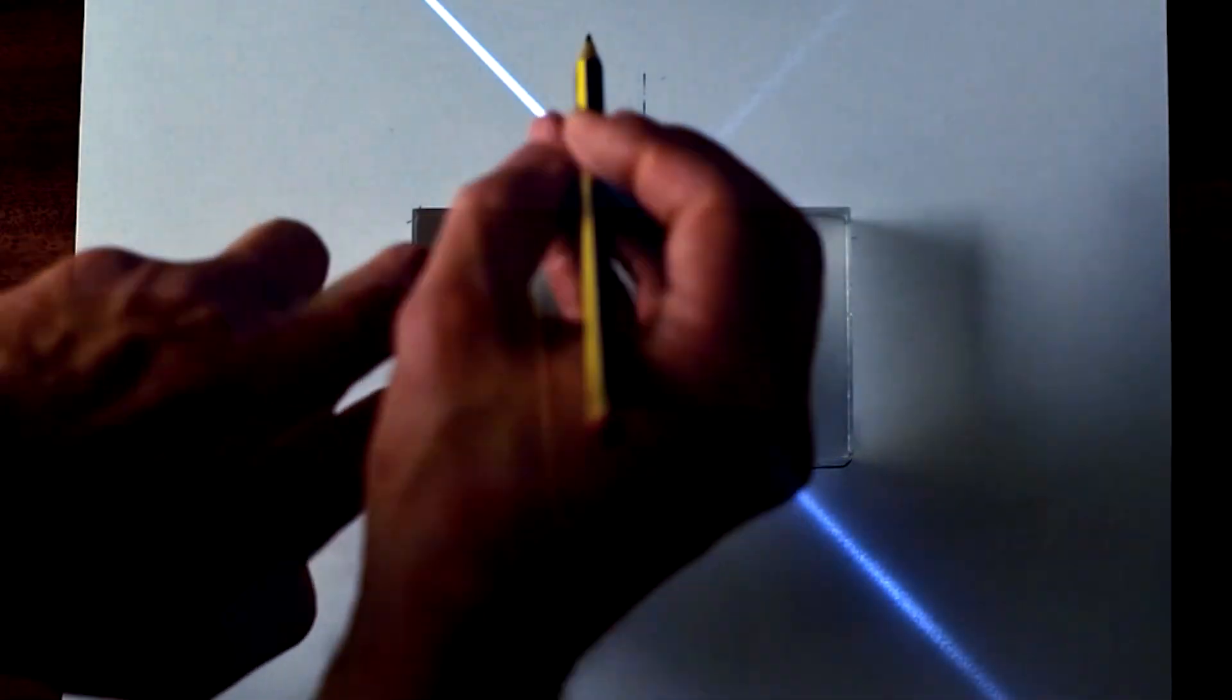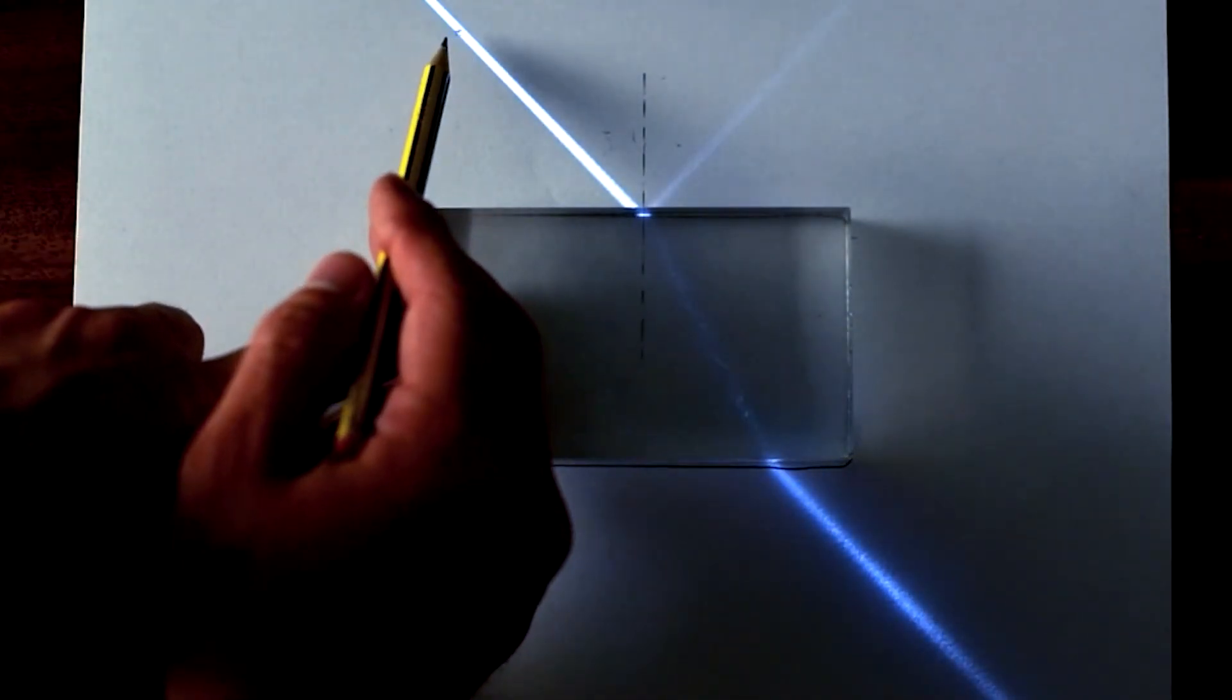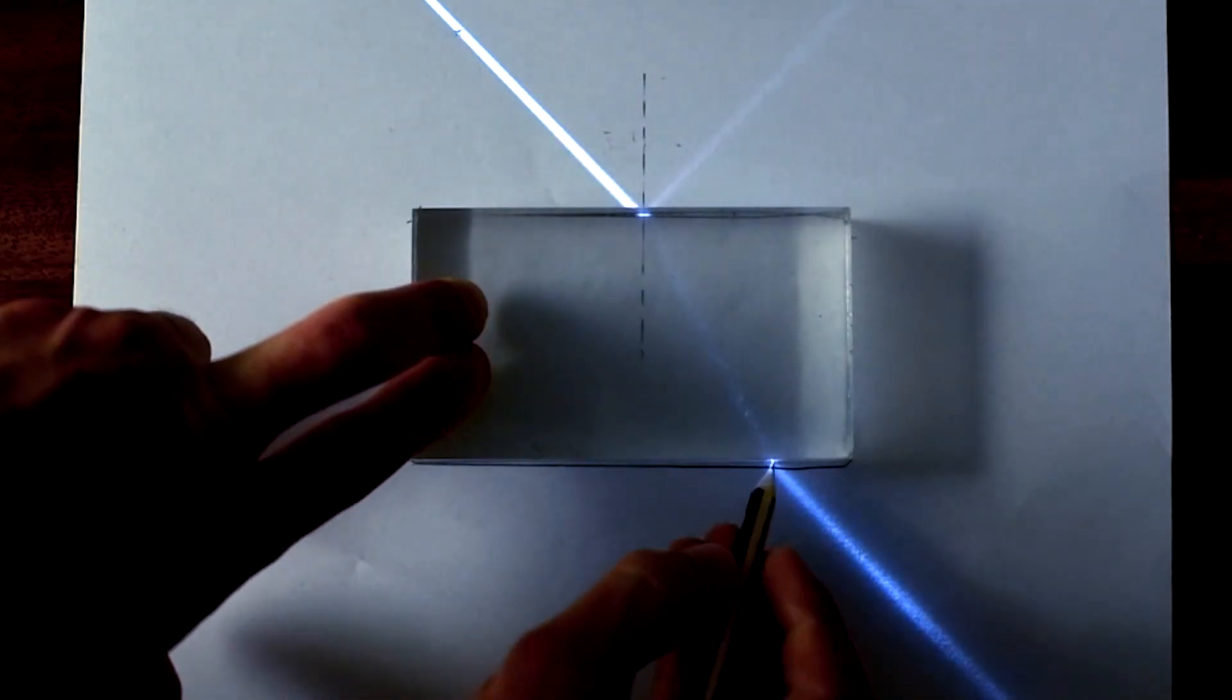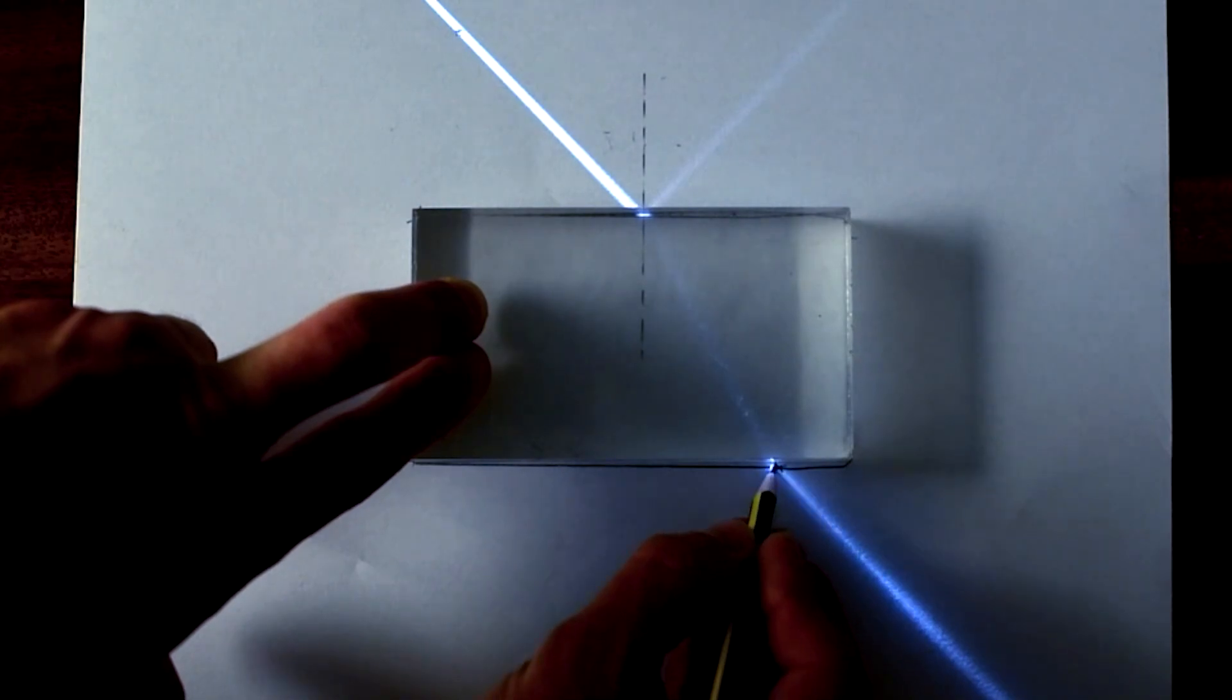So what we're going to do, we're just going to put a little cross on the beam. And we know that it's hitting the block at the normal there. And then we're going to put a little cross where it exits the glass block.